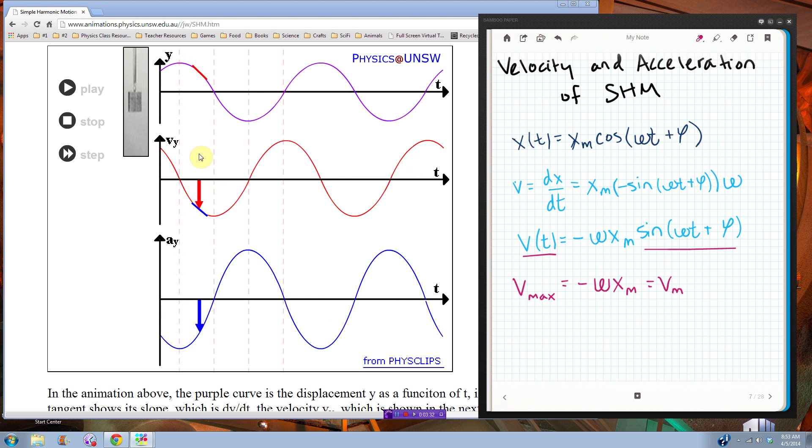Here's velocity. This is the derivative. Notice it's also harmonic. But we kind of have the opposite maximum. So like, when our position is at a maximum, velocity is zero. When position is at zero, velocity magnitude is a maximum.